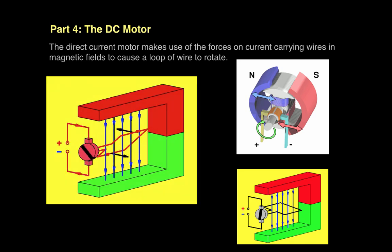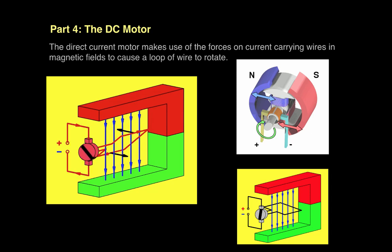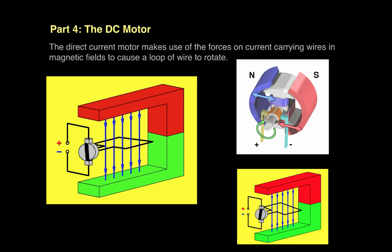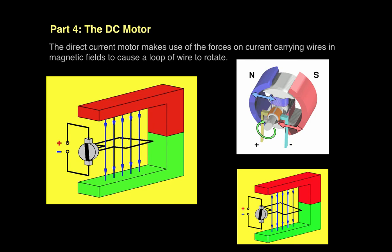Here's a video of this rotation in action. Every time the split ring commutator hits the brushes there's no current through the circuit, allowing it to switch, so the top part becomes the bottom part and vice versa. You could hook this up to something you want to cause to rotate, such as a wheel of a car or the rotational blades of a blender.